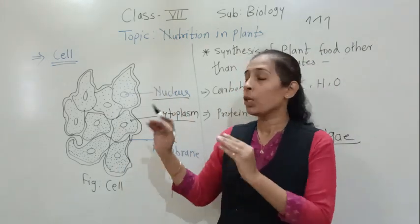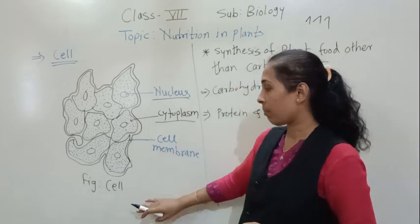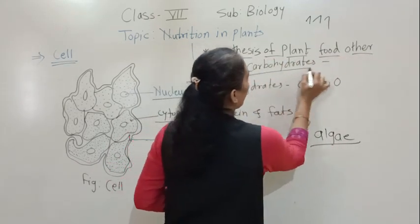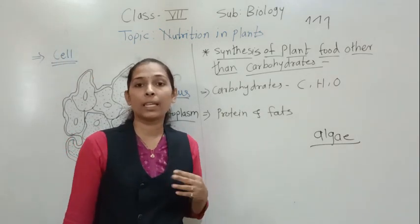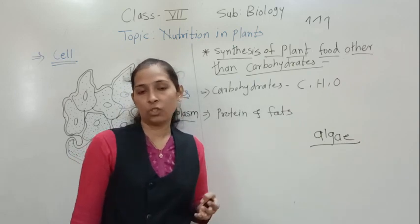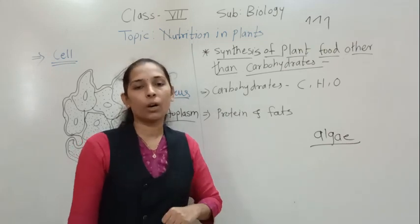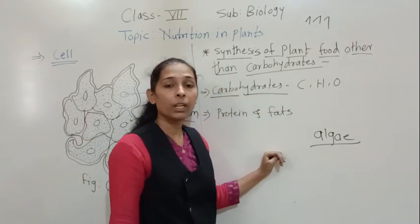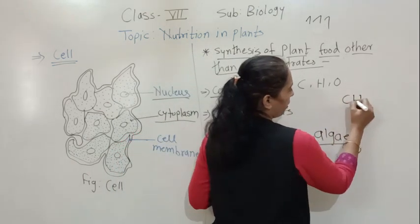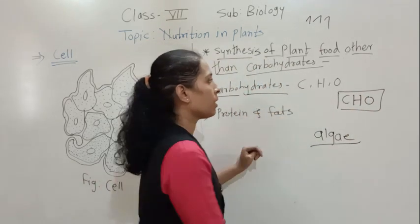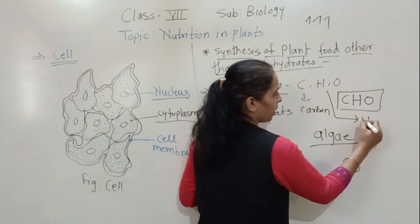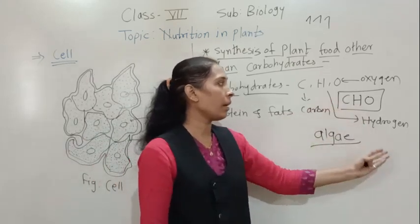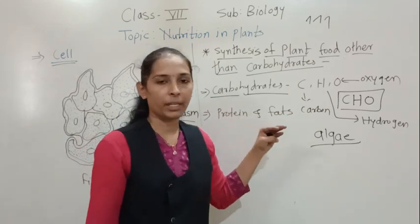You have to draw this diagram in your biology notebook. Now let's look at the synthesis of plant food other than carbohydrates. We have seen that plants make their own food in the presence of sunlight and they make their food in the form of carbohydrate, or glucose. This carbohydrate is made up of three different elements — the formula for carbohydrate is C, H, O: carbon, hydrogen, and oxygen. The carbohydrate is made up of carbon, hydrogen, and oxygen.